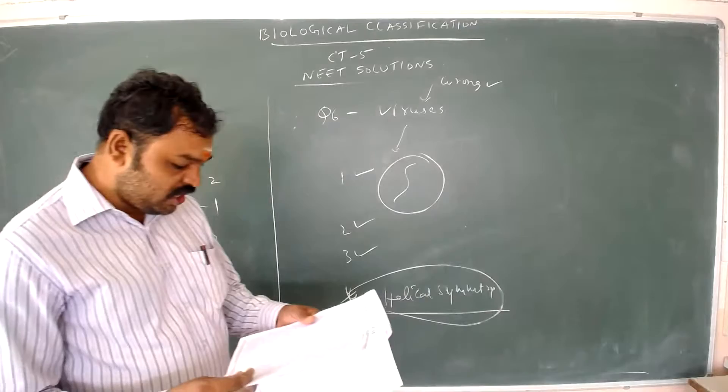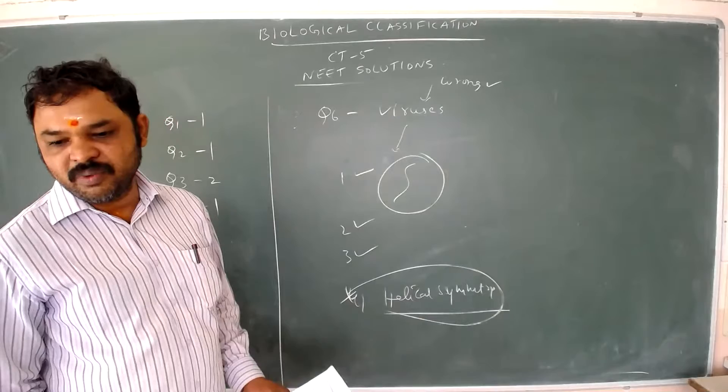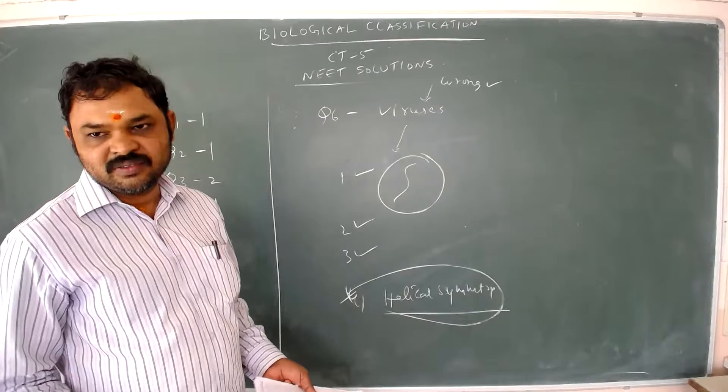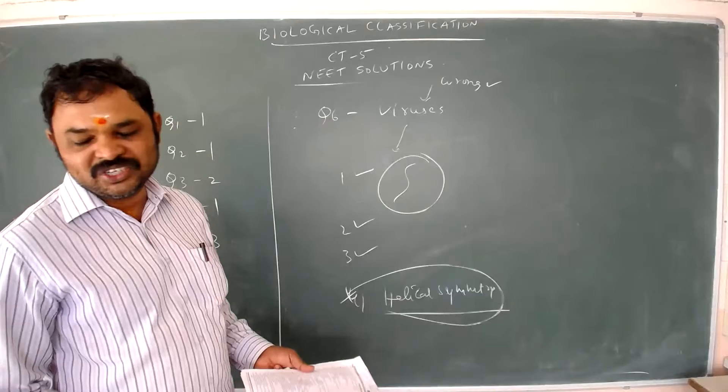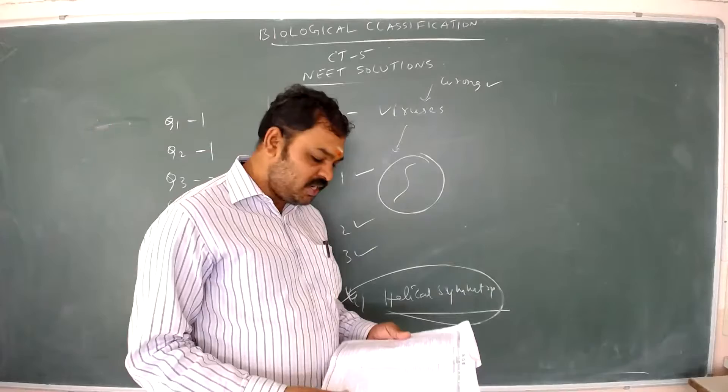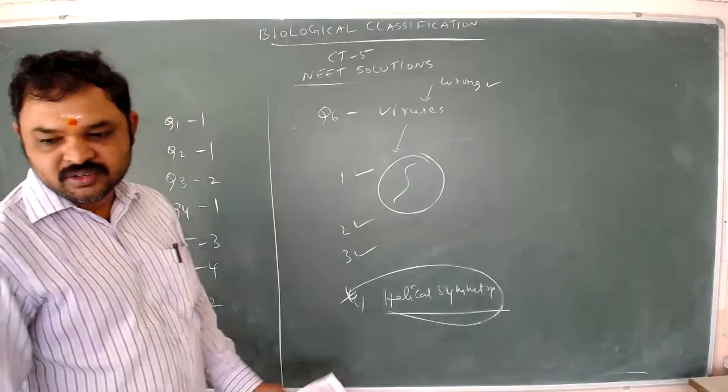Question number seven: what is cyanobacteria also referred to as? Cyanobacteria are not called slime molds or golden algae or protists. Cyanobacteria come under Monera, not Protista. The other name for cyanobacteria is blue-green algae. Question number seven answer is option 2: blue-green algae.